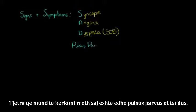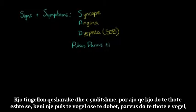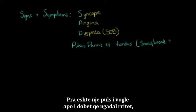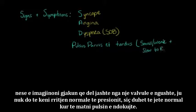Other things that you can look for are things like pulsus parvus et tardus. This means that you have a small or weak pulse — parvus meaning small, and tardus meaning slow. So it's a small or weak pulse that is slow to rise, because if blood is coming out of a very tight valve, you're not going to have the normal rise in pressure that you normally feel when feeling someone's pulse.